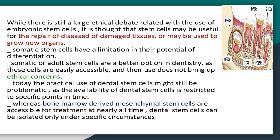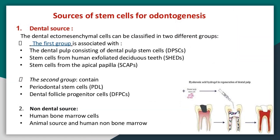While there is still a large ethical debate related to the use of embryonic stem cells, stem cells may be useful for the repair of diseased or damaged tissues, or may be used to grow new organs. Somatic stem cells have a limitation in their potential for differentiation, but are a better option in dentistry as they are easily accessible and their use does not raise ethical concerns. However, dental stem cells are restricted to specific points in time, unlike bone marrow-derived mesenchymal stem cells, which are accessible at nearly all times.